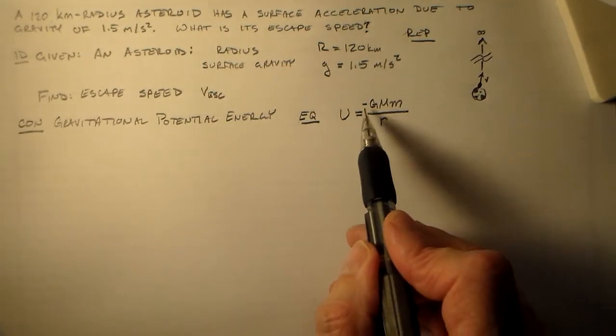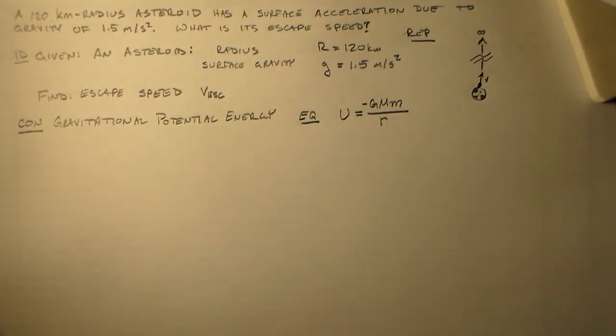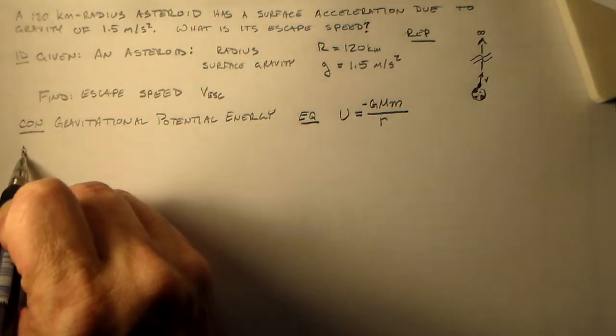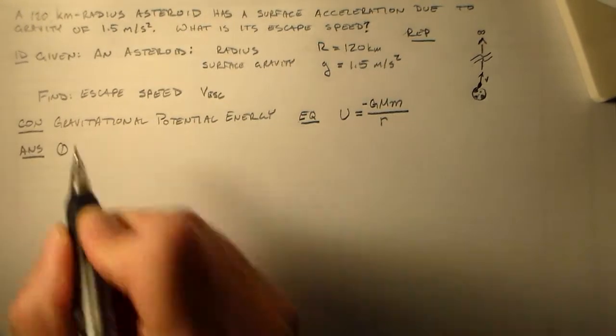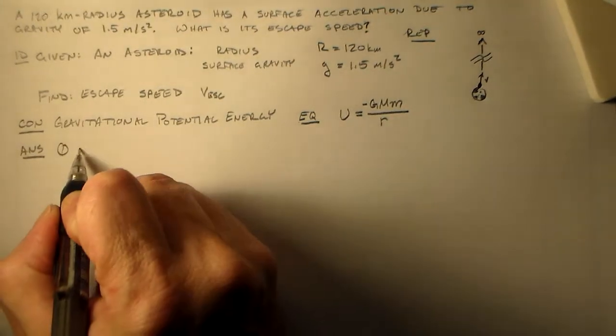All right. So this U equals minus GMm over R. This you should know. You should always know it. But you should know it like you were born knowing it. So you want an answer, right? First, what I want to do here is I want to reformulate the GPE.